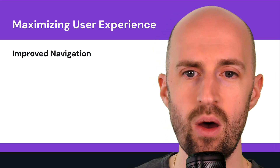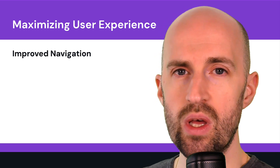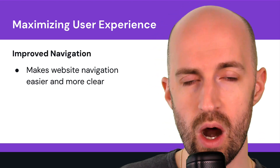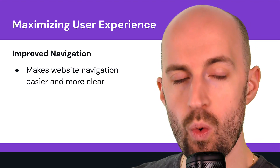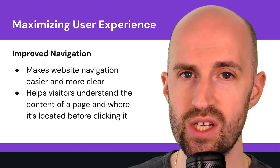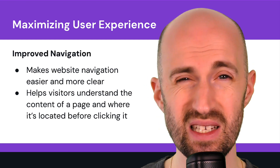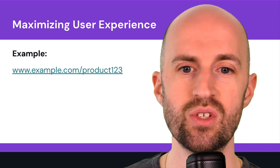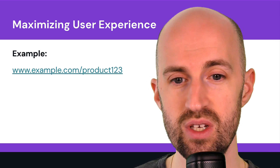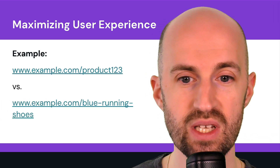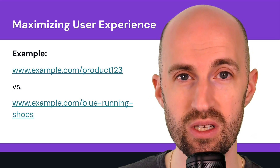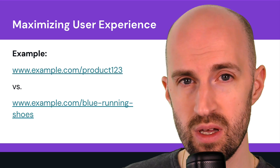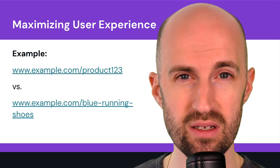Maximizing your user experience: making these URL improvements leads to better navigation — it makes navigation much clearer, so you know where you are in the hierarchy and can navigate up or down just by looking at the URL. It also helps visitors understand the content of the page before they click, so they can decide if it's relevant for them. For example, 'example.com/product-123' — you don't really know what that product is — versus 'example.com/blue-running-shoes,' where you know exactly what that product is and are much more likely to click.